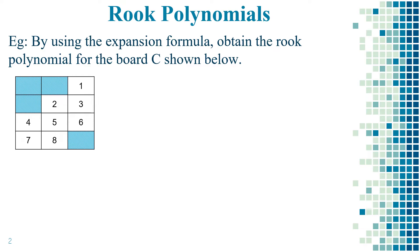The procedure is the same as the previous example. As per the expansion formula, we will consider any of the squares and mark it as the asterisk symbol — it can be one, two, three, four, five, or six; it's our choice. In this example, I'm considering square one as the asterisk symbol. If you choose any other square, you will get the same rook polynomial.